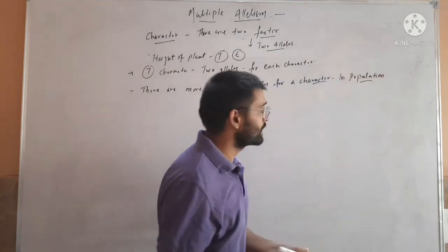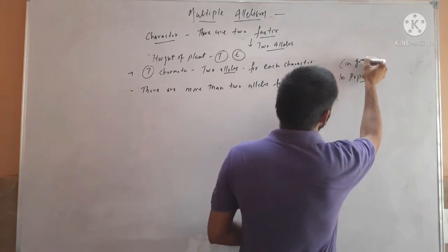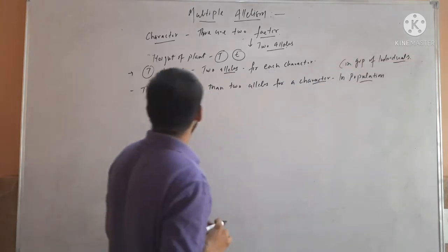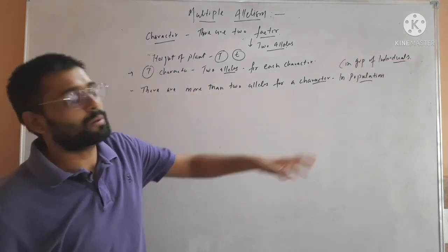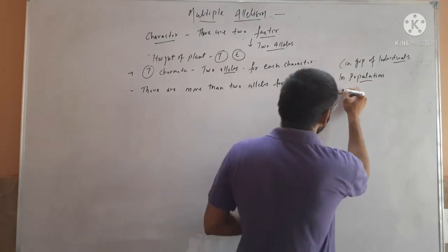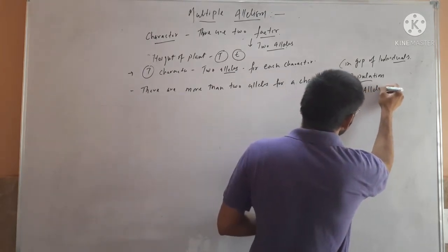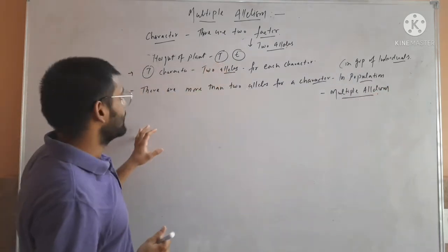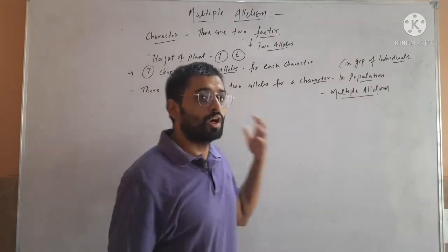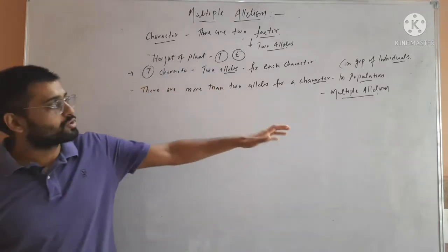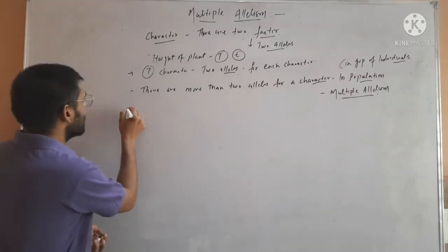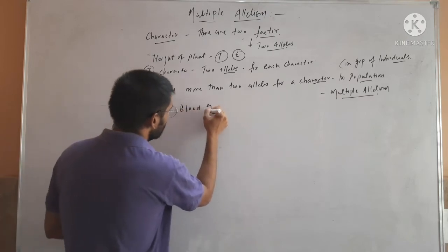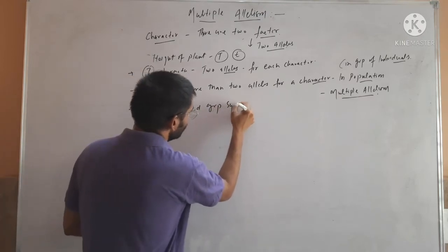Or you can say in a group of individuals. So if more than two alleles are present, then it is called multiple allelism. In most cases there are two alleles, but in some cases there are more than two alleles for a character, and this is called multiple allelism. An example of multiple allelism is the ABO blood group system.